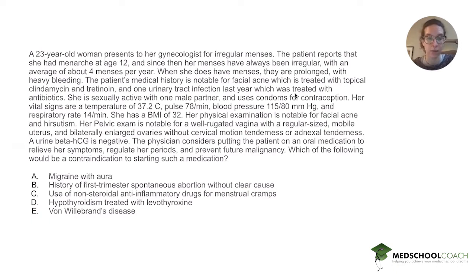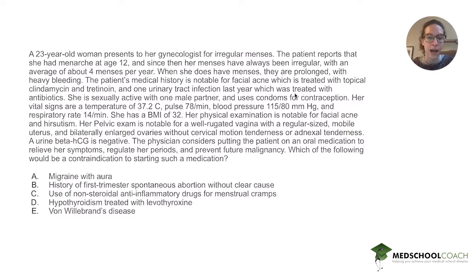A: migraine with aura. B: history of first trimester spontaneous abortion without clear cause. C: use of non-steroidal anti-inflammatory drugs for menstrual cramps. D: hypothyroidism treated with levothyroxine. Or E: von Willebrand's disease.